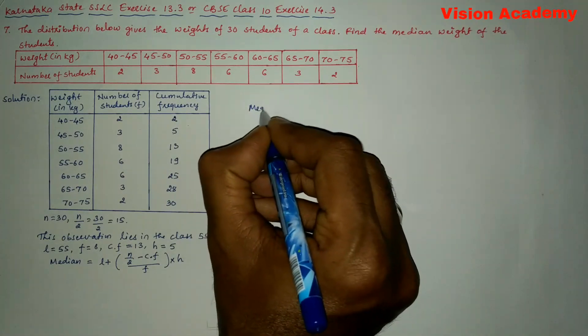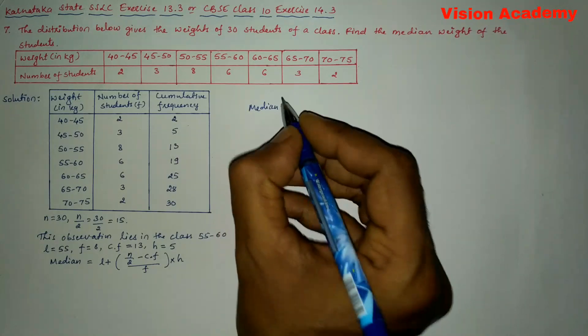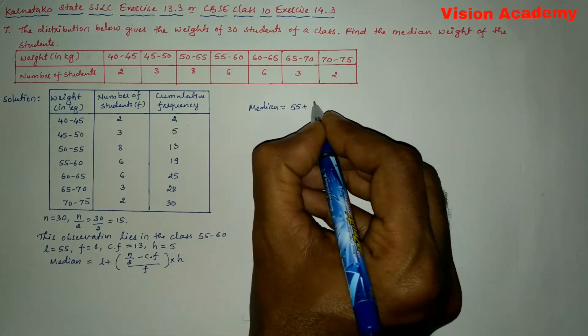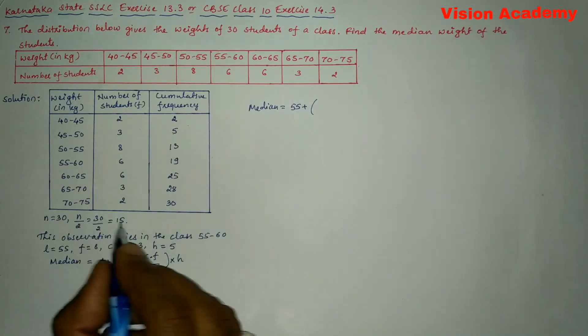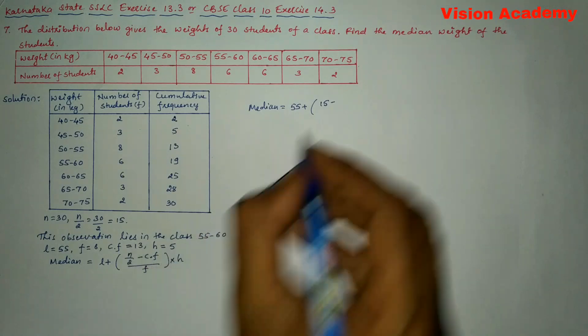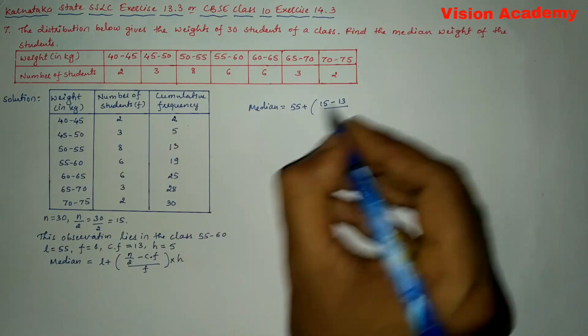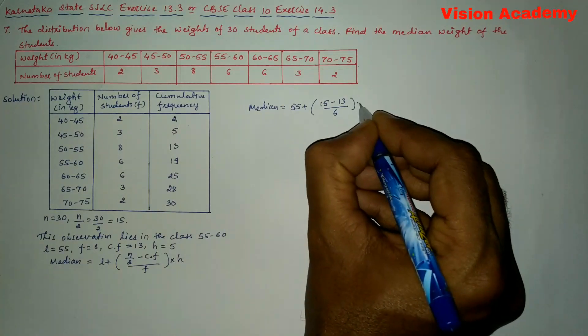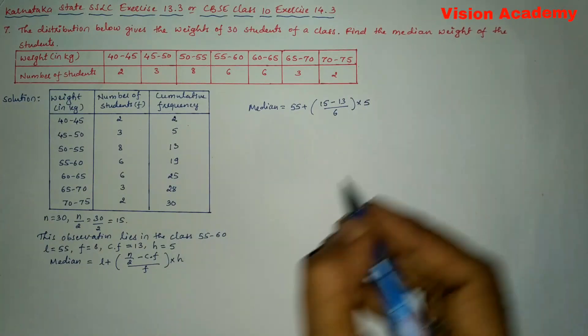Now let us substitute the values. So here we will write median equals l is 55 plus n by 2. n by 2 is 15 minus cumulative frequency is 13, whole divided by frequency 6, into h is class size 5.